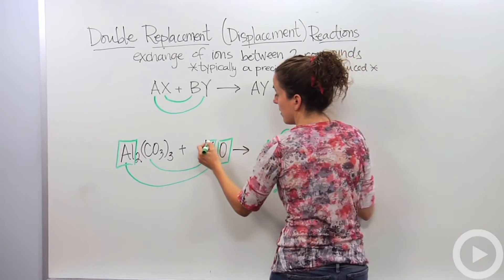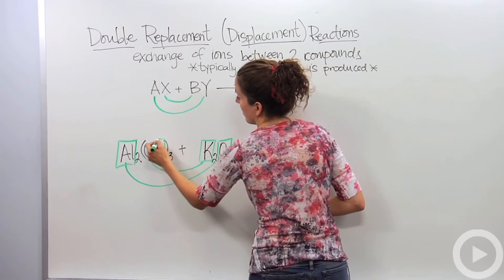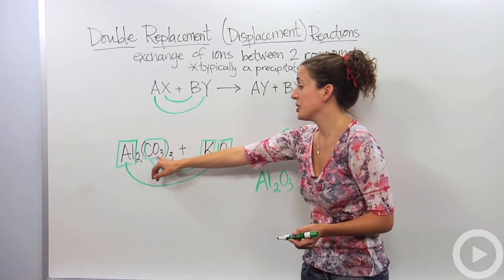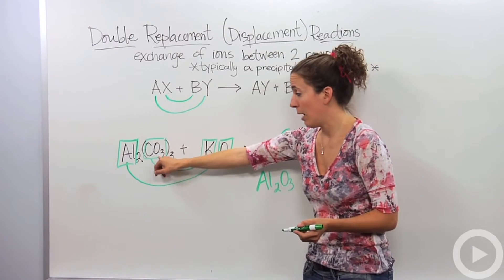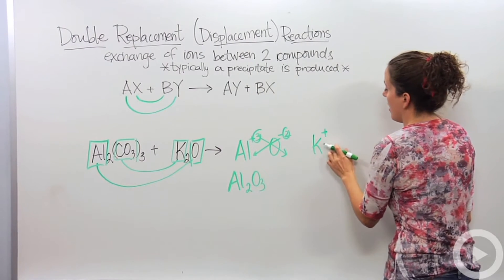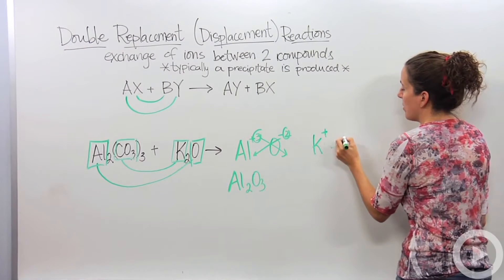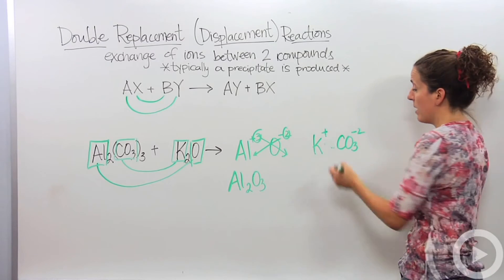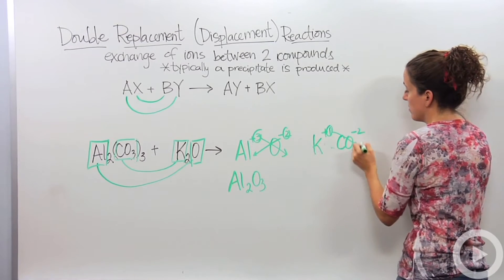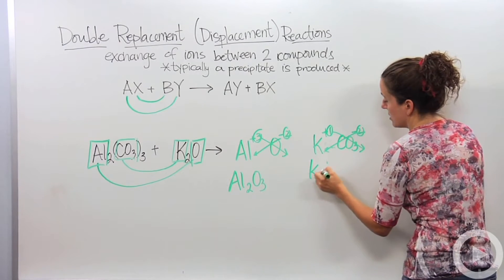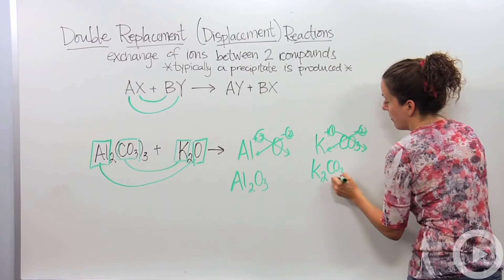And now potassium is going to bond with carbonate. Carbonate is CO3, that is carbonate, so we're going to actually keep that within the compound. So we have K, which is going to make a plus 1 ion, and carbonate, which is a minus 2 charge. We're going to cross those, and we're going to get K2CO3.